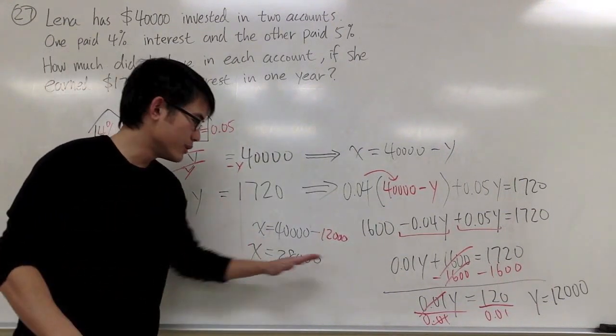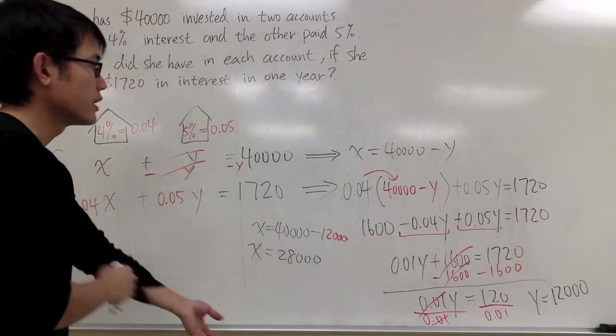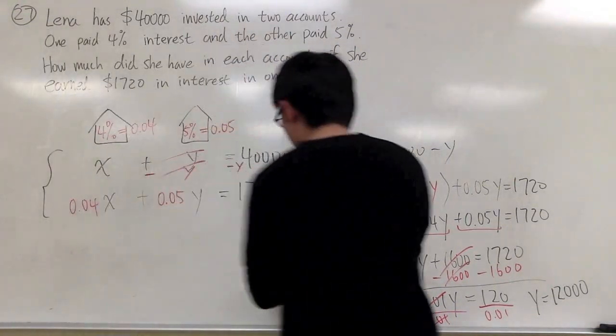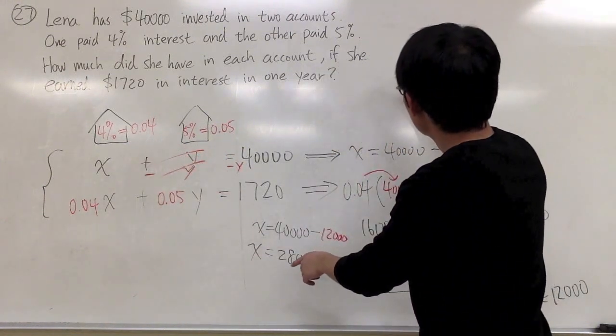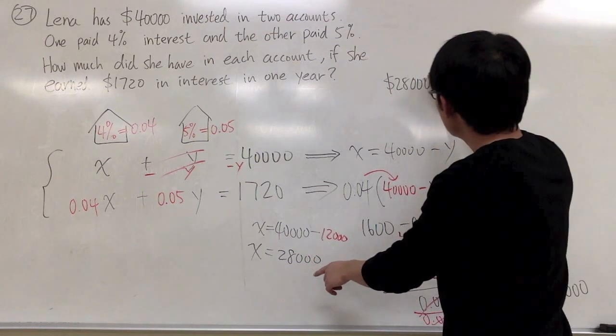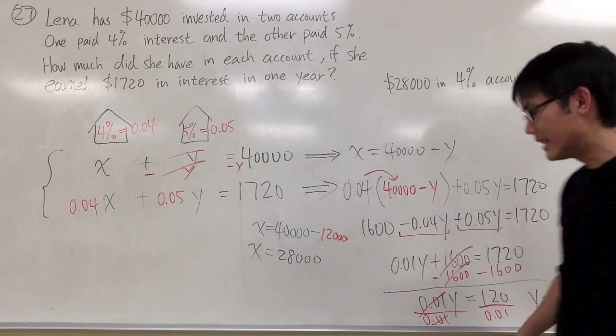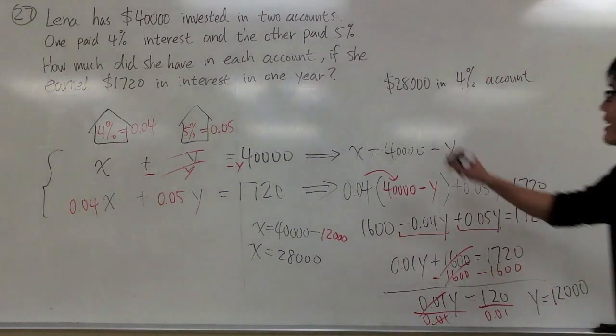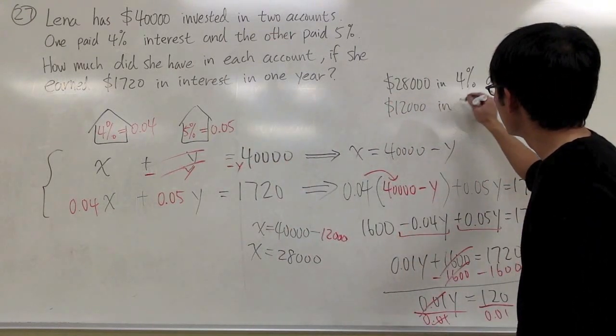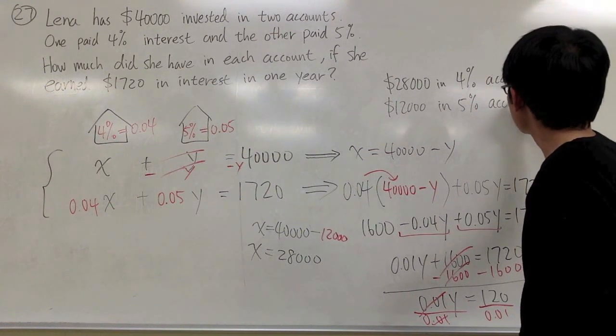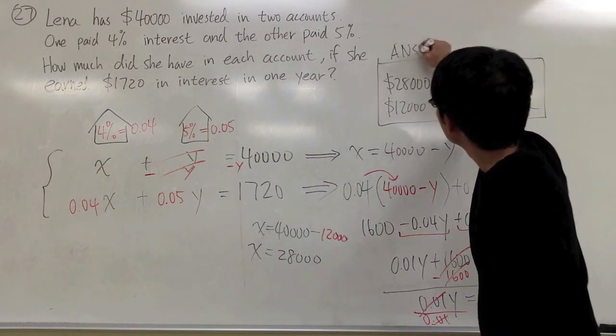However, you cannot just write down x is equal to this and y is equal to that for the answer. Because this is a word problem, we have to answer the questions according to the situation. x is how much money we're putting into the 4% account. So I would just say we invest $28,000 in the 4% account. And likewise, the y, which is the 12,000 right here, is how much money we're putting into the 5% account.